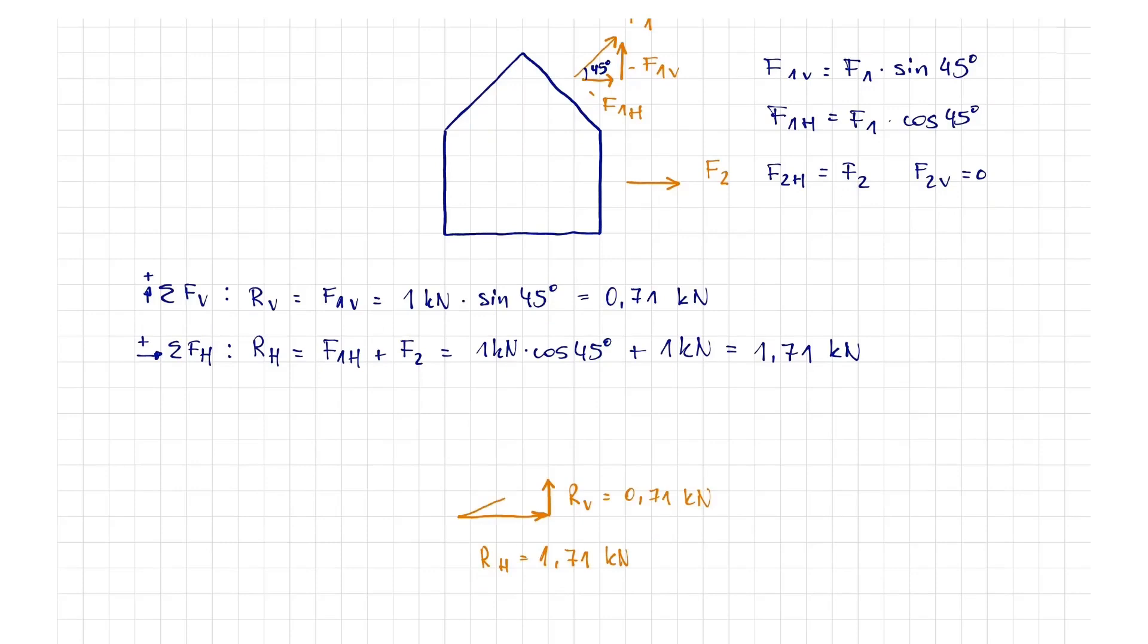For this reason, the resultant is determined using the Pythagorean theorem. The resultant is the hypotenuse of the triangle which is equal to the square root of RV squared plus RH squared. This is calculated as 1.85 kN, similar to the graphical method.